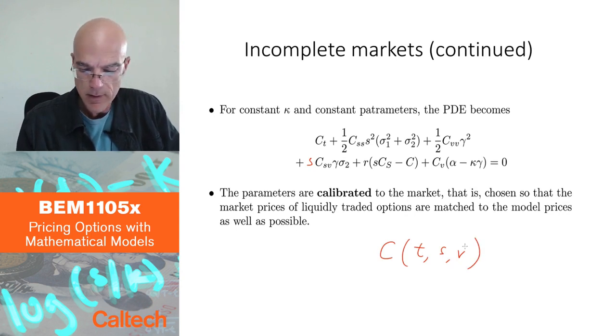And V is not as directly observable as S. S is just the stock price. You see it, time is also, you know what time is. What is volatility? Well, that you have to estimate.